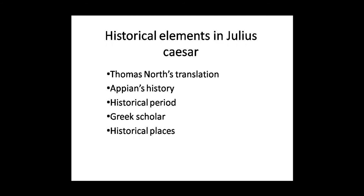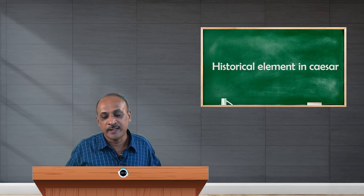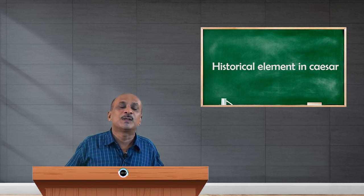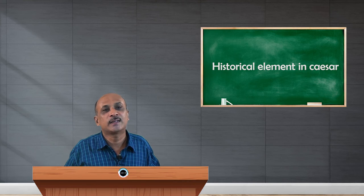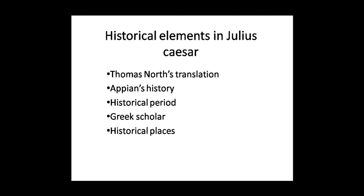Bologna is a historical place that exists even now under different names. Sardis is another place that today we recognize in the Asia Minor region. The war between Mark Antony's troops and Brutus' troops takes place in these historical places like Sardis. Philippi is another important geographical area, which today we recognize in the Macedonian country. Shakespeare alters these historical periods a little bit to suit his account of action in the play.